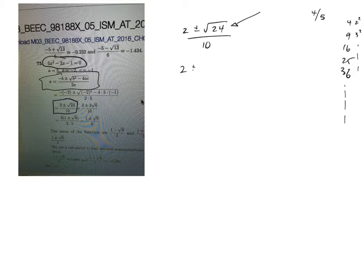So 2 plus or minus square root of 24, I could write as a square root of 4 times the square root of 6, all over 10. Then I'd have 2 plus or minus the square root of 4 is 2, root 6, over 10.